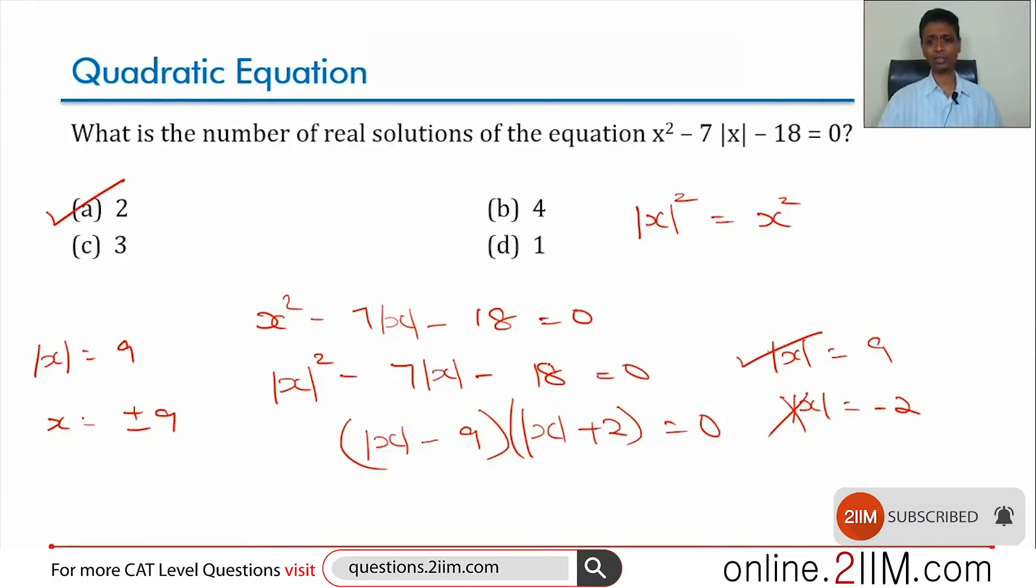The key thing here is to simplify this as a quadratic in mod x and then solve from there. Solving it as a quadratic in x, you will have to solve two different quadratics and then solve for x greater than 0, x less than 0, and then see which solutions are valid.